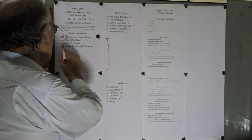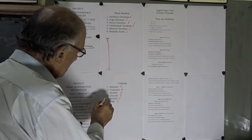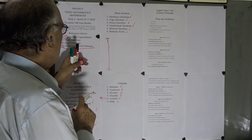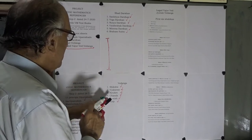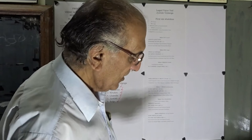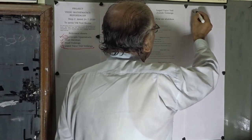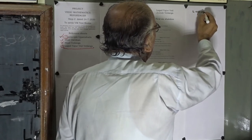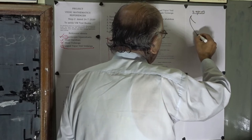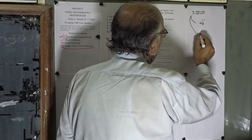The Lagda Yajurved Jyotish Vedanga is one scripture — it is the Jyotish Vedanga — and this is the scripture to be taken as the foundational scripture, serving as a guiding role model for textbook writing. Lagda Rishi Muni wrote a pair of scriptures: one is the Yajurved Jyotish Vedanga and the other is the Rigved Jyotish Vedanga.